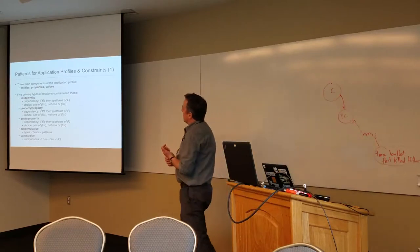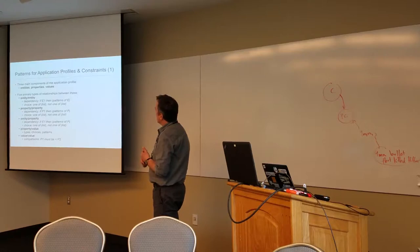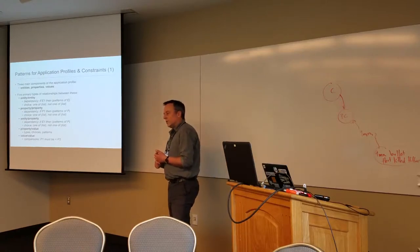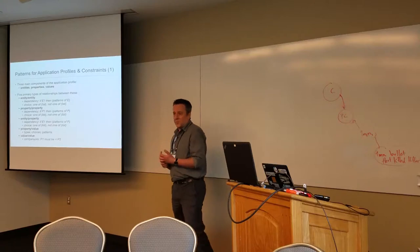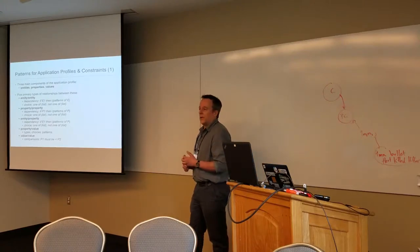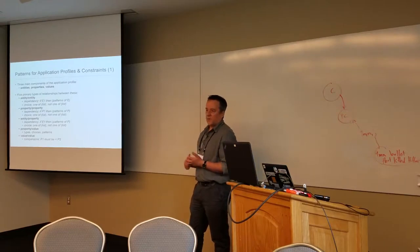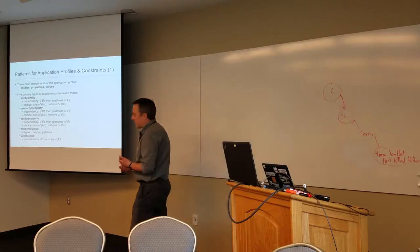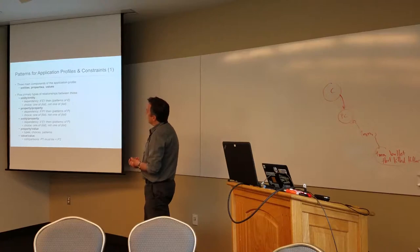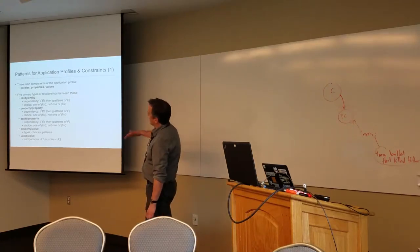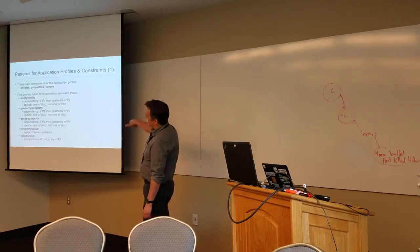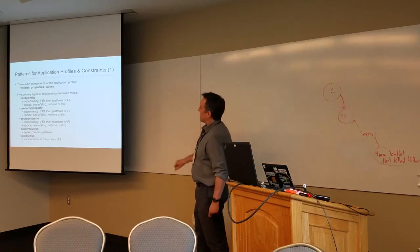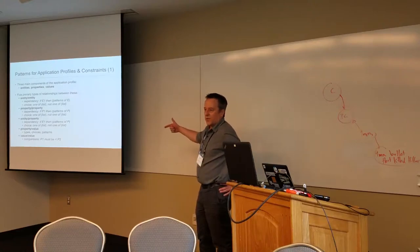Channeling Karen again: she's identified these patterns of constraints. A lot of the work to come up with universal models for application profiles is going to be about how to express constraints in an interoperable way, and that's where this work dovetails very closely with the validation work — ShEx and SHACL and so on. Karen has identified five primary types of relationship between these concerns: entity to entity, property to property, entity to property, property to value, and value to value. And then some patterns of what those constraints could actually be. That's not an exhaustive list, but it gives a general indication.